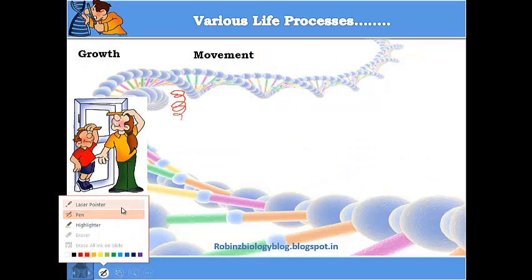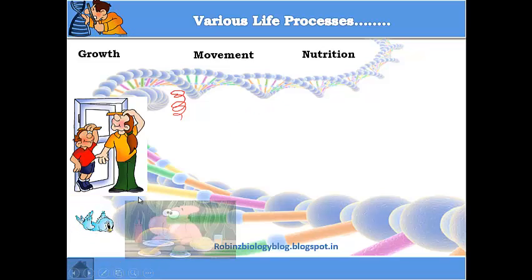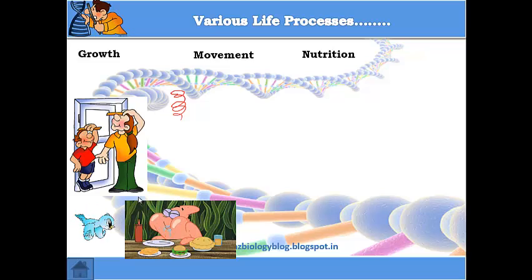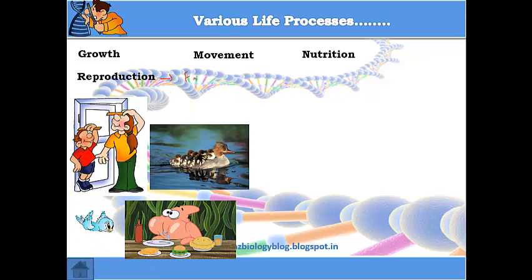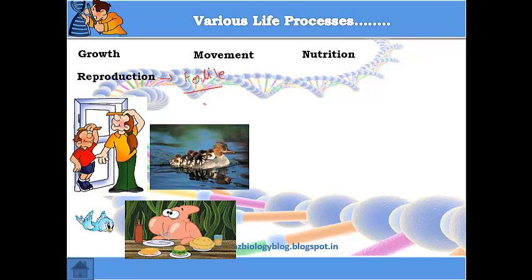The next life process is nutrition — we all feel hungry and need a source of energy to survive; without it, survival is at stake. Then there is reproduction, which is the ability to give birth to young ones of your own kind. Those young ones should also have the potential to breed further and be reproductively active, otherwise the species will come to an end.